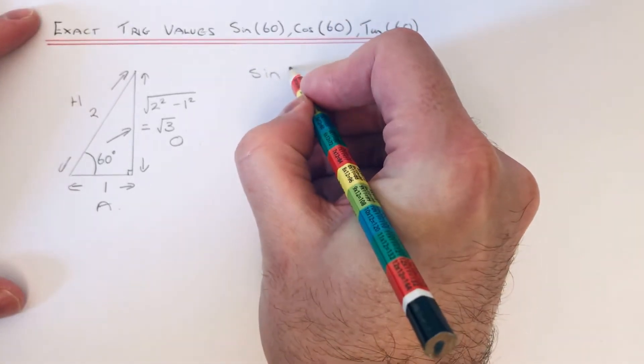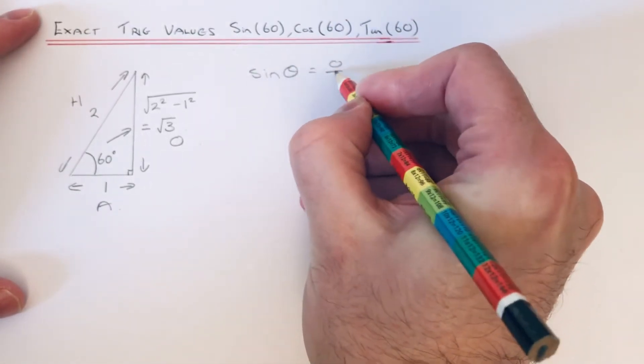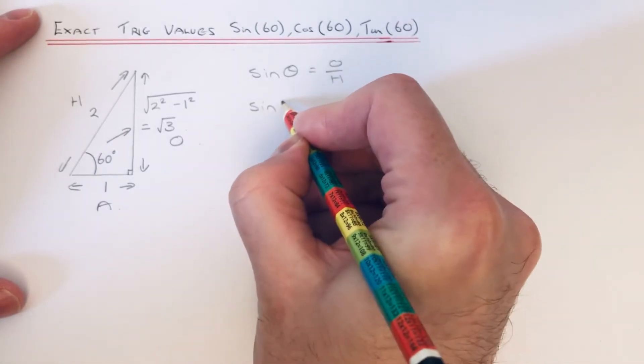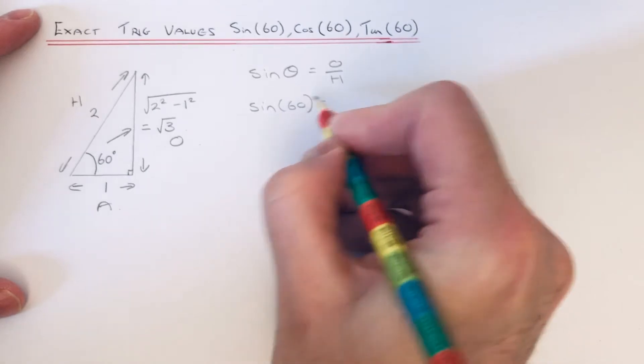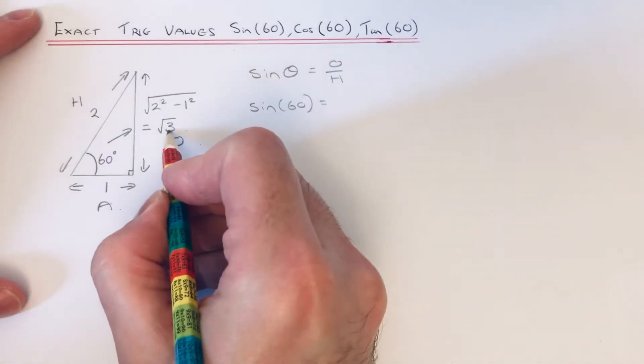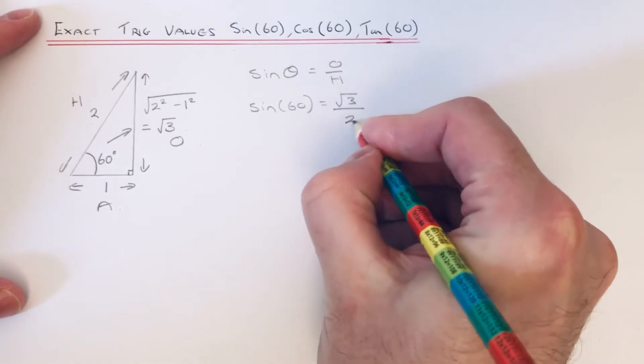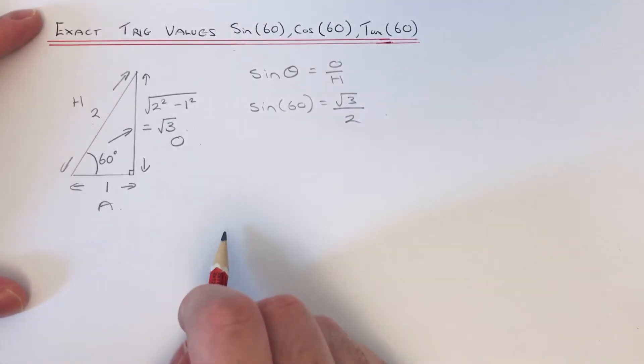Now sin theta is opposite over hypotenuse, so sin 60 would be root 3 over 2. So that's our value for sin 60.